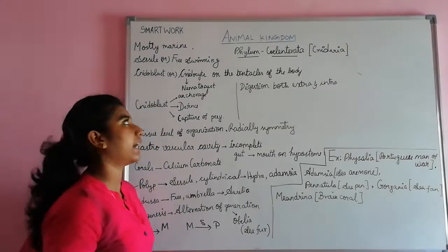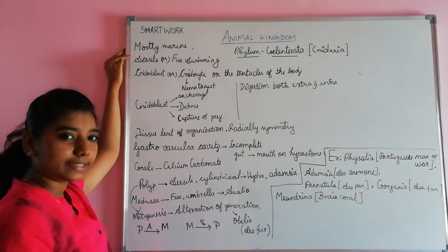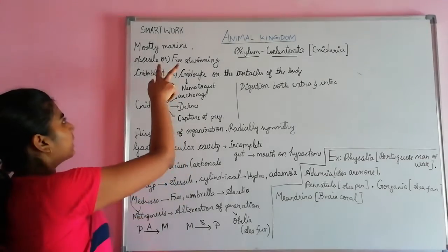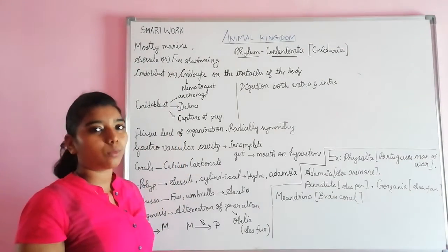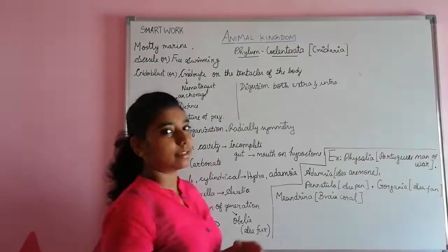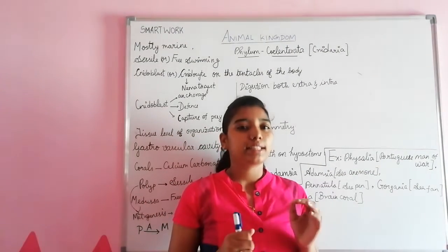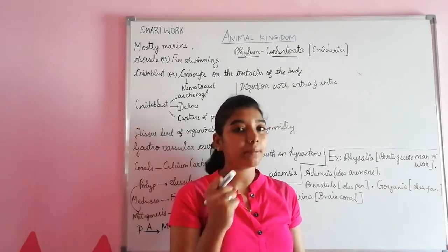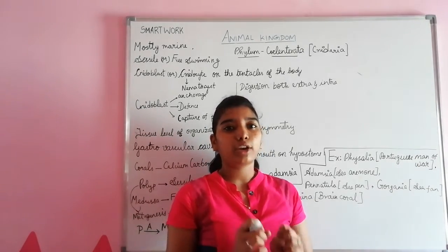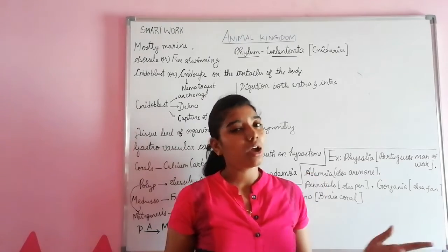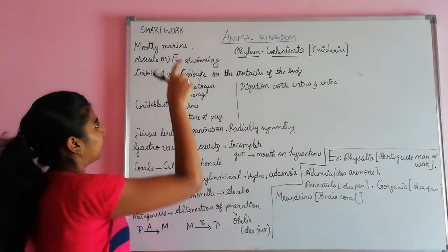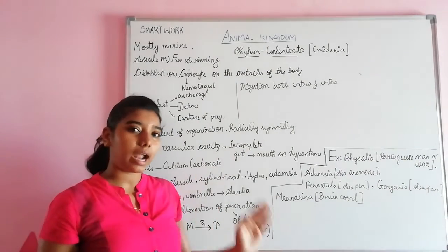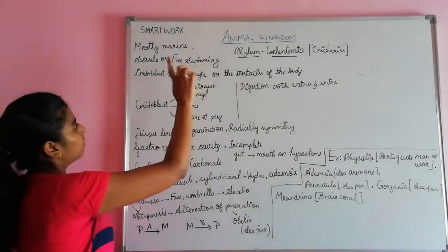Now we can see the general characters. They are mostly marine but some are freshwater. Then they have two forms: one is sessile and the other is free swimming. Sessile means they are attached to a substratum — they cannot move from one place to another. Free swimming means they can move from one place to another freely.